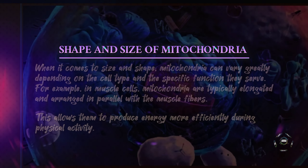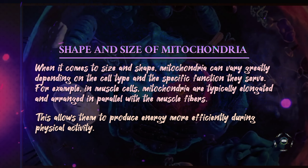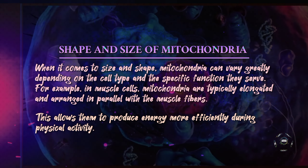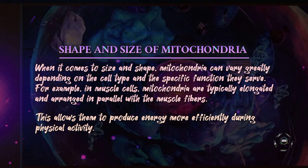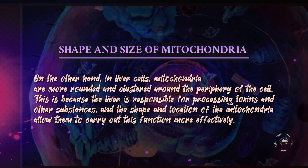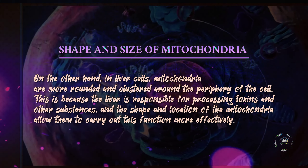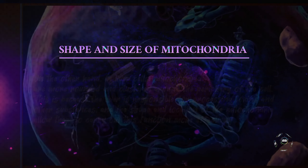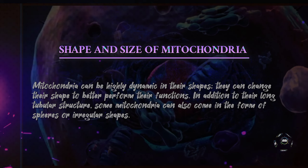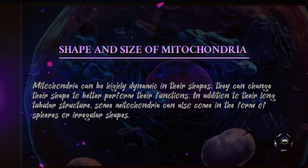For example, in muscle cells, mitochondria are often elongated and arranged in muscle fibers. This allows them to produce more energy during exercise. Mitochondria in liver cells are round and clustered around the cell's edge, because the liver processes toxins and other substances, and the mitochondria's shape and location help them do this job better. Mitochondria have a lot of flexibility in their shapes and can change to better carry out their functions.